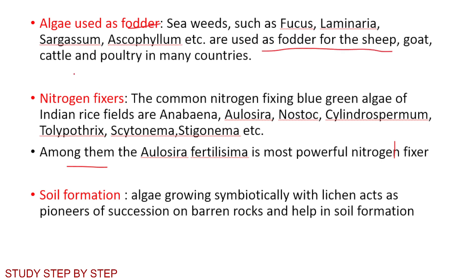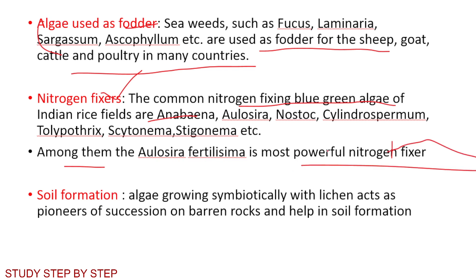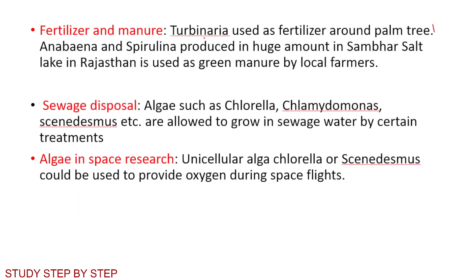Algae as fodder: seaweeds such as Fucus, Laminaria, Sargassum, Ascophyllum, etc., are used as fodder for sheep, goats, cattle, and pigs. Nitrogen fixers: common nitrogen-fixing blue-green algae of Indian rice fields include Anabaena, Aulosira, Nostoc, Cylindrospermum, Tolypothrix, Scytonema, and Aulosira fertilissima — a powerful nitrogen fixer. Soil formation: algae grow symbiotically with lichens and act as pioneers of succession on barren rocks, helping in soil formation. Turbinaria is used as fertilizer around palm trees.